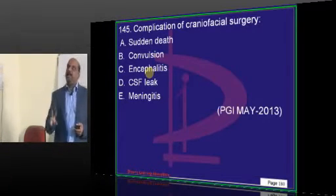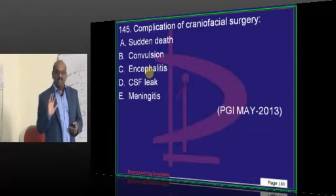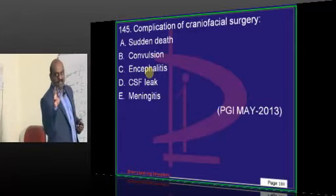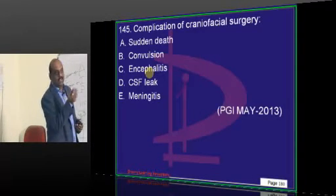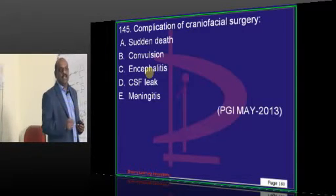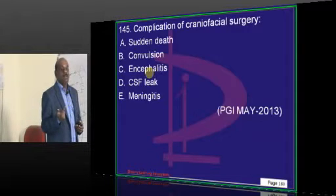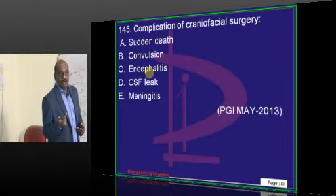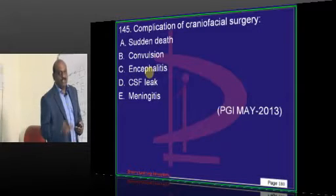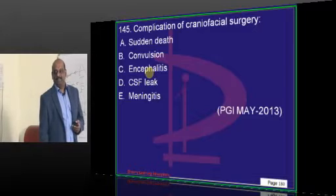Solving PGI papers is almost like doing a quick review revision of most of the high-yield topics indirectly. Because 5 points are there, at least 3 to 4 are correct out of that. So 20 papers have got 5,000 questions. 5,000 into at least 2 to 3 facts — so almost 12,000 to 15,000 commonly tested facts are covered.